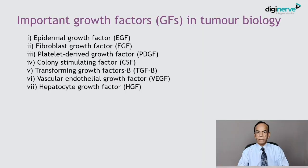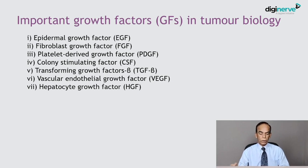Differences in proliferation among malignant tumors are influenced by a variety of growth factors, mainly secreted by the tumor cells. Important growth factors involved in tumor biology include epidermal growth factor, fibroblast growth factor, platelet-derived growth factor, colony stimulating factor, transforming growth factor beta, vascular endothelial growth factor, and hepatocyte growth factor. These will be discussed in greater detail when covering the molecular basis of neoplasia.